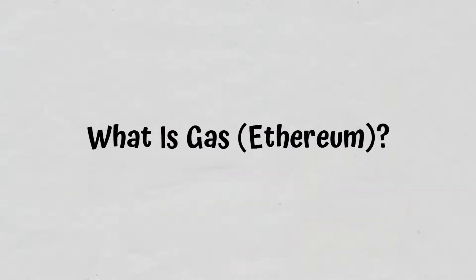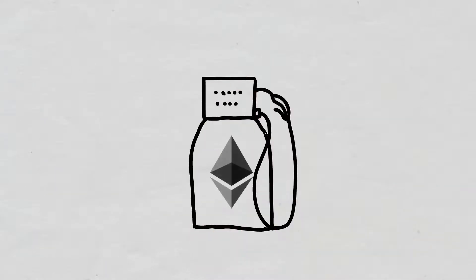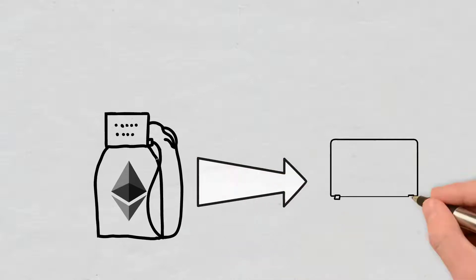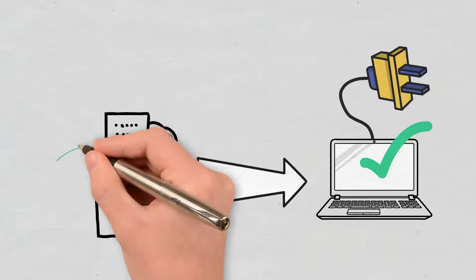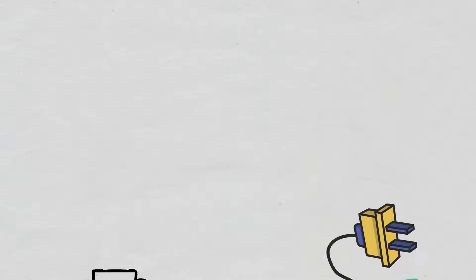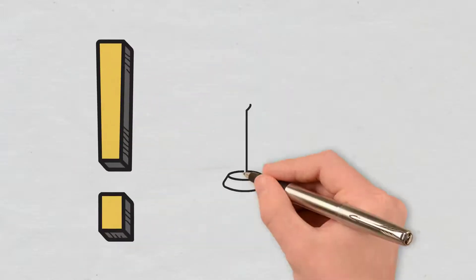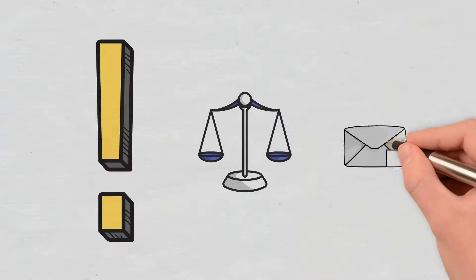What is gas? Gas is the unit of measurement used to express the computational power required to successfully carry out a specific command or action on the Ethereum blockchain. Thus, each action will require gas from querying a balance to sending a transaction.